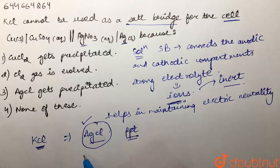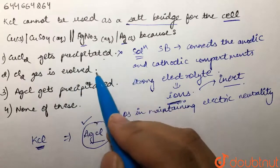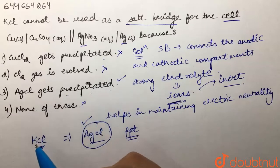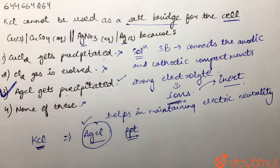If you look at our options: first is saying CuCl gets precipitated—not correct. Chlorine gas is evolved—not correct. AgCl gets precipitated—this is correct. None of these—also not correct. So the answer to this question would be option number third, that AgCl gets precipitated, hence KCl should not be used as a salt bridge for this cell.